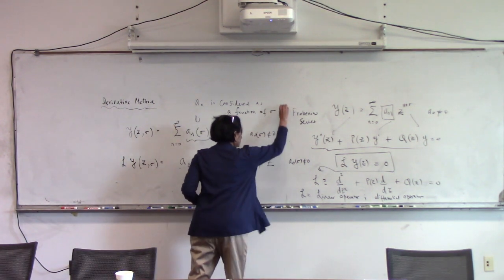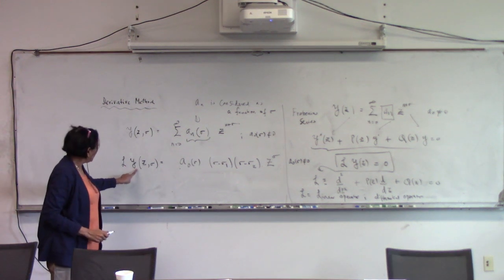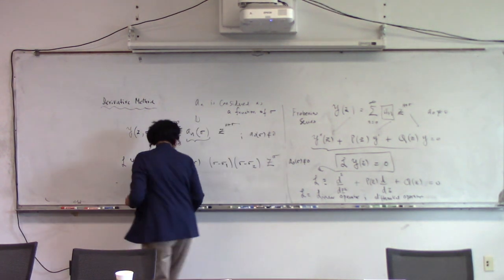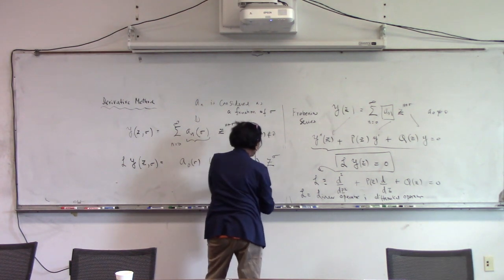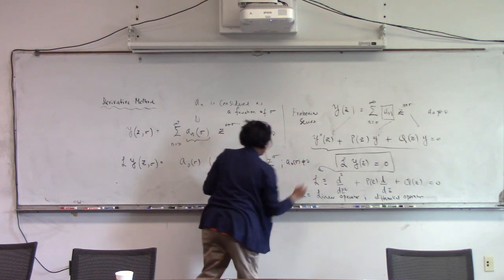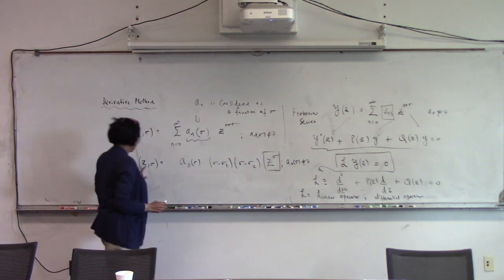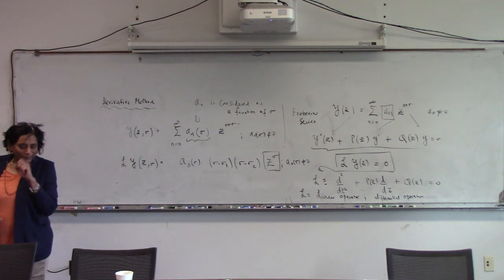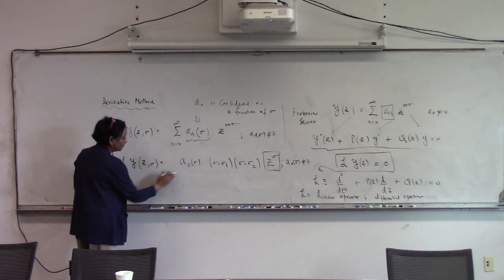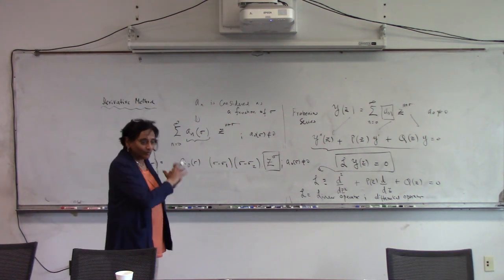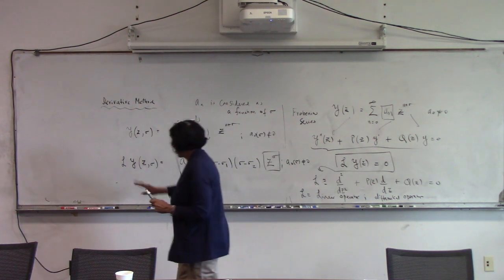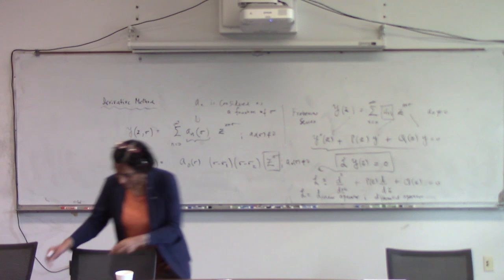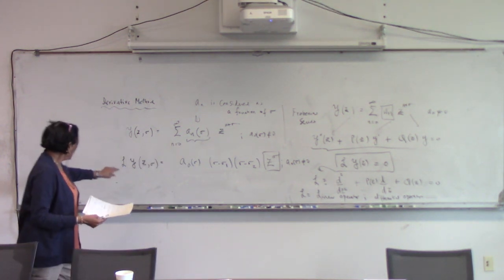That way you rationalize this: L operating on y(z, sigma) should be something of this nature. L of y with sigma equal to sigma 1, that will become this — basically those are the roots. You can understand how this is being constructed. It sort of satisfies the homogeneous equation. The functional dependence you are guessing, but it has a good basis for how it should be.